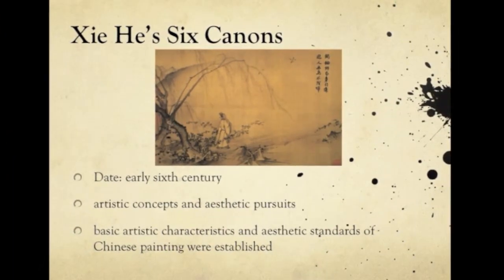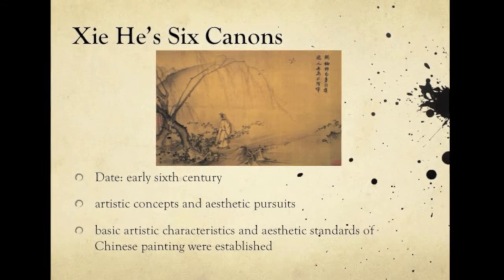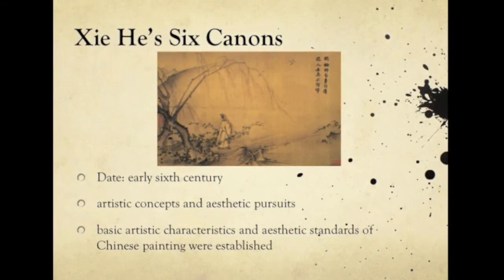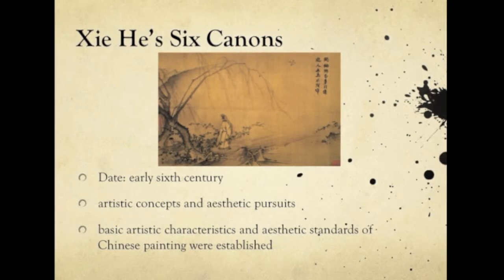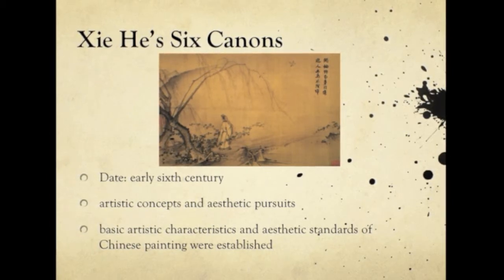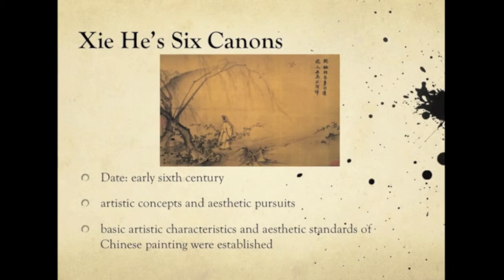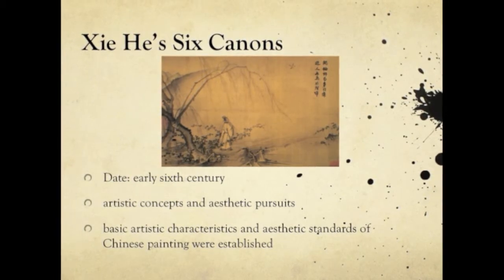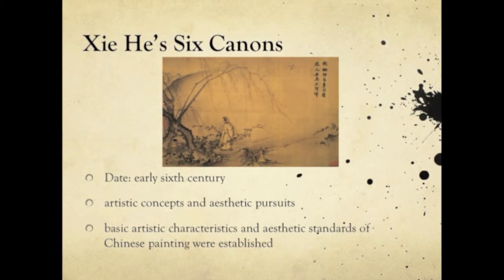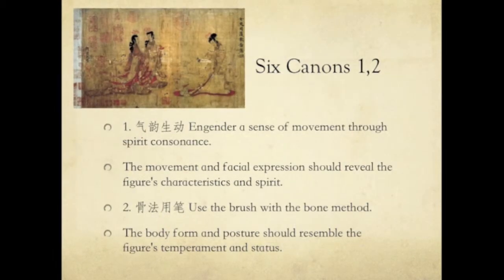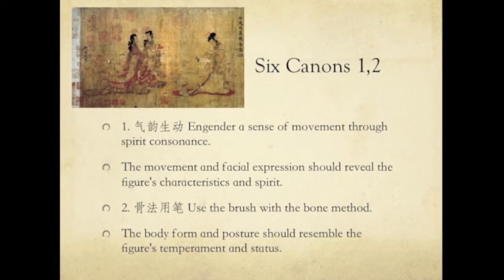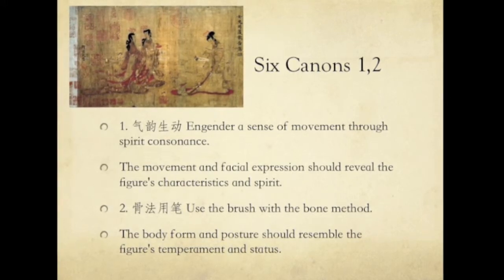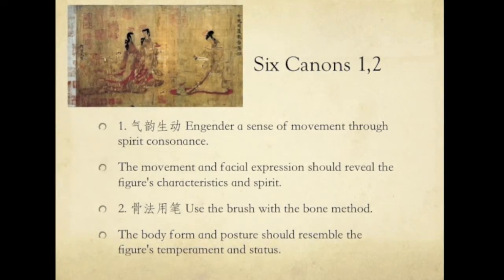Xie He formulated a set of six canons of painting in the early 6th century. The paintings of that time reflected the artistic concepts and aesthetic pursuits of the era. In a sense, the basic artistic characteristics and aesthetic standards of Chinese painting were established during this period. Several variant translations have been proposed, and scholars actively debate the precise meaning of each canon, particularly for the first and second.